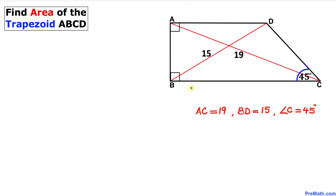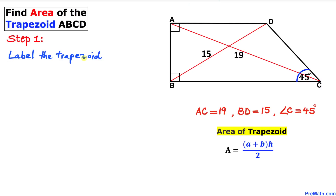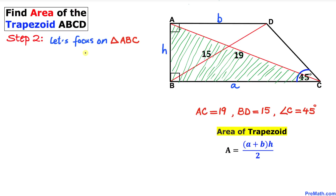Let's get started with the solution. A trapezoid is a four-sided flat shape that has a pair of parallel sides. The area formula is: Area = (a + b) × H / 2. We'll label side BC as lowercase a, side AD as lowercase b, and side AB as the height H.